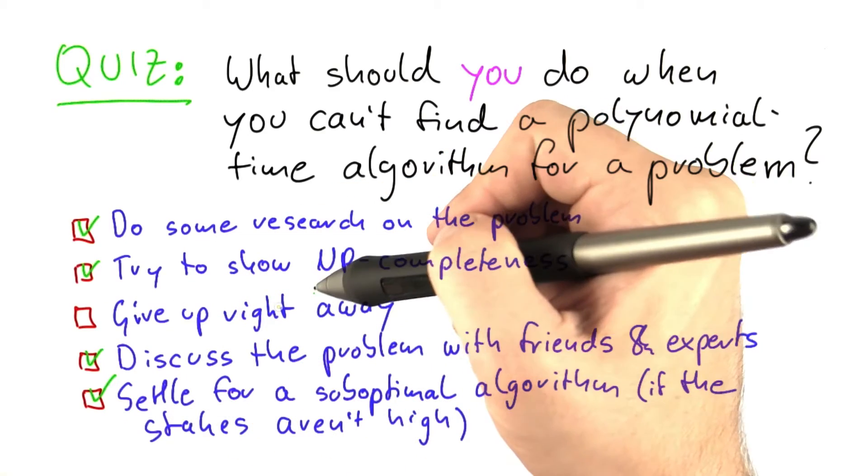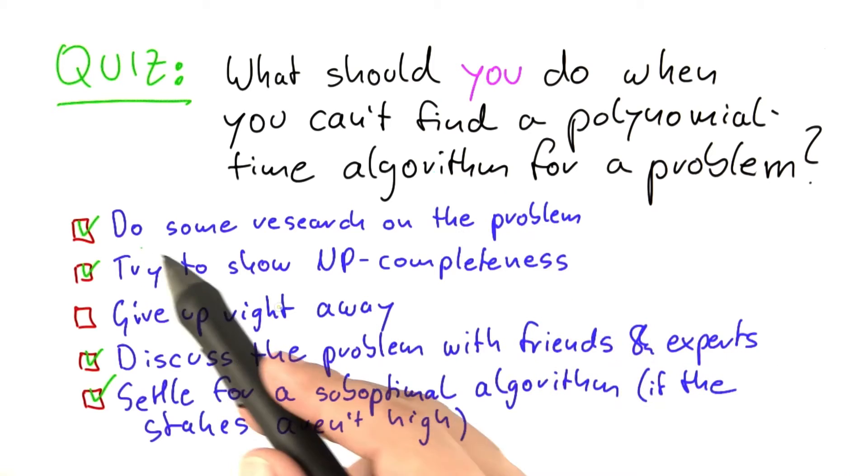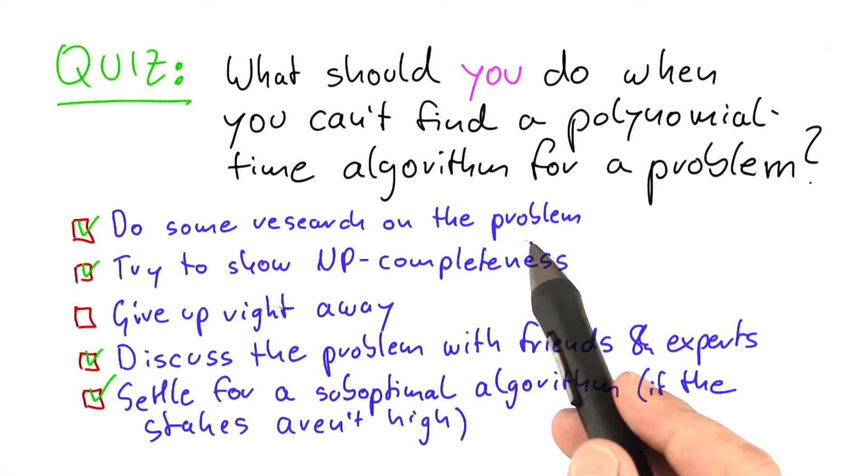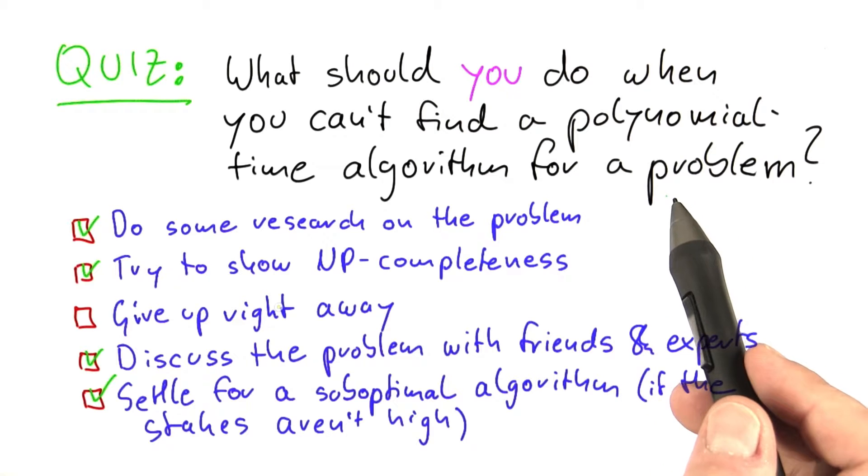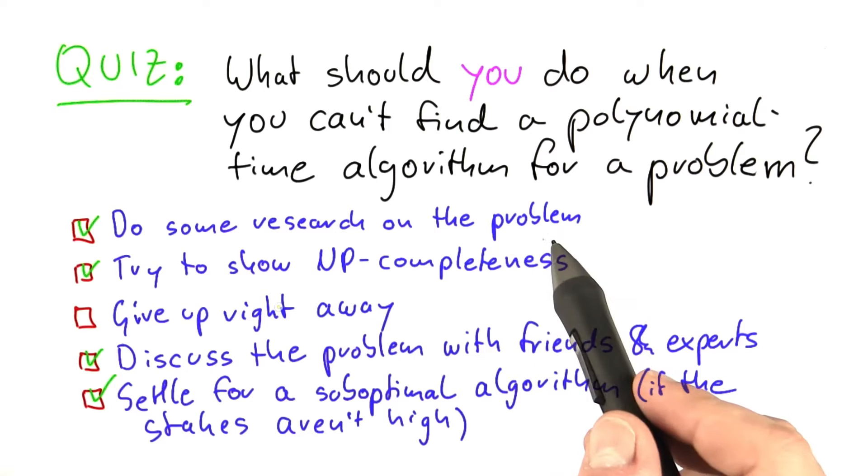All options except for giving up immediately are viable options depending on the situation. It's always a good idea to do research on the problem you're working on because many problems that occur in practice have occurred elsewhere before. So it's likely that there will be some research on this problem and that can help you a lot potentially.